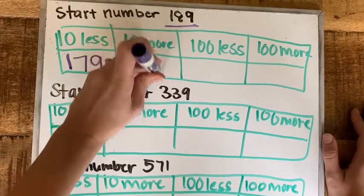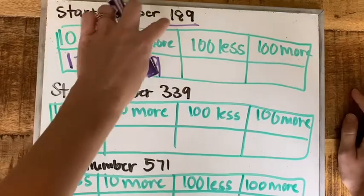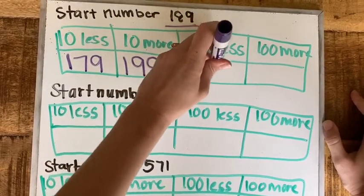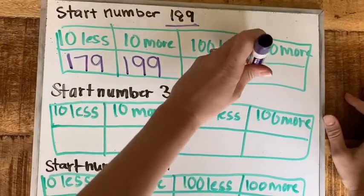Now coming back to this number, 100 less, but we only have 100, so if we take that away we'll have no hundreds left and we'll just have 89. And then 100 more, we have 100, add another hundred is two hundreds, and our tens and ones don't change.